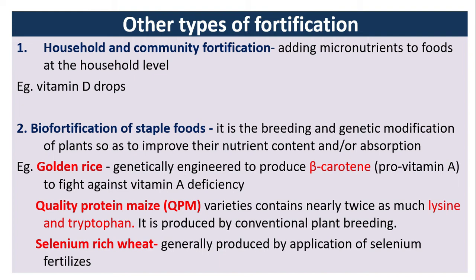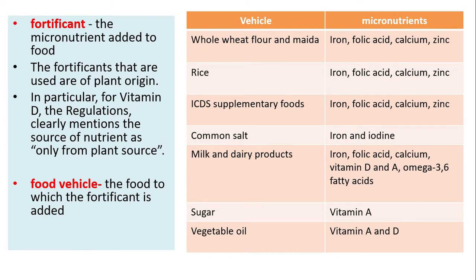Quality Protein Maize (QPM) contains nearly twice as much lysine and tryptophan and is produced by conventional plant breeding. Selenium-rich wheat and selenium-rich tomatoes are generally produced by application of selenium fertilizers. The micronutrients added to food are known as fortifications. The fortifications used are of plant origin; in particular, for vitamin D, regulations clearly mention that the source nutrient must be from plant sources only.